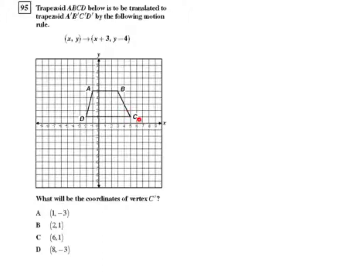Well, let's look at vertex C. They're asking what the coordinates will be of C', so we start off with coordinate C. So C has coordinates (5, 1), and if we look at our mapping, we're going to add 3 to the x coordinate and we're going to subtract 4 from the y coordinate.